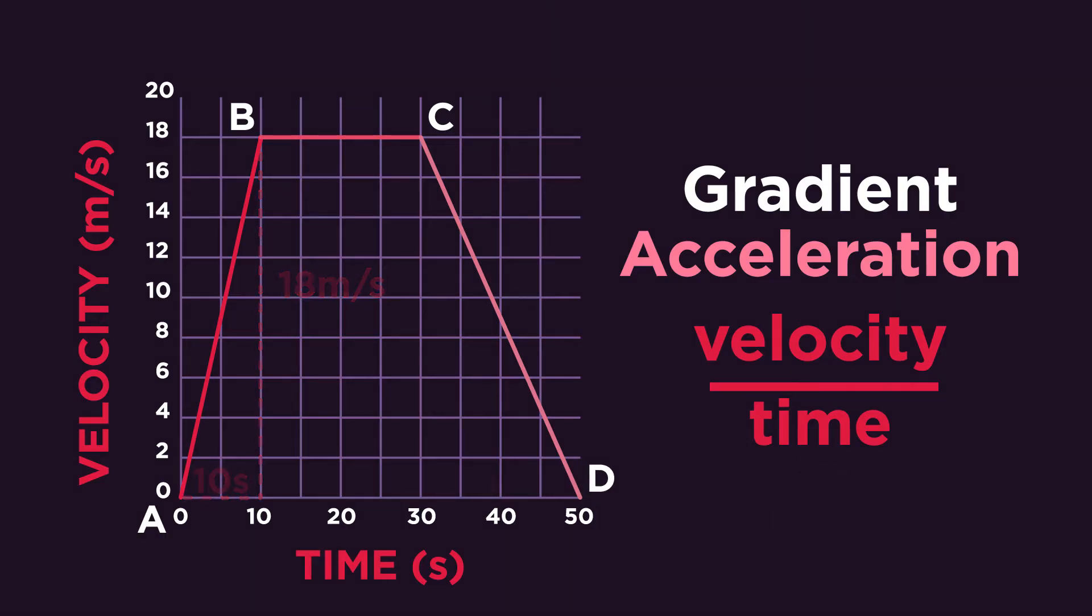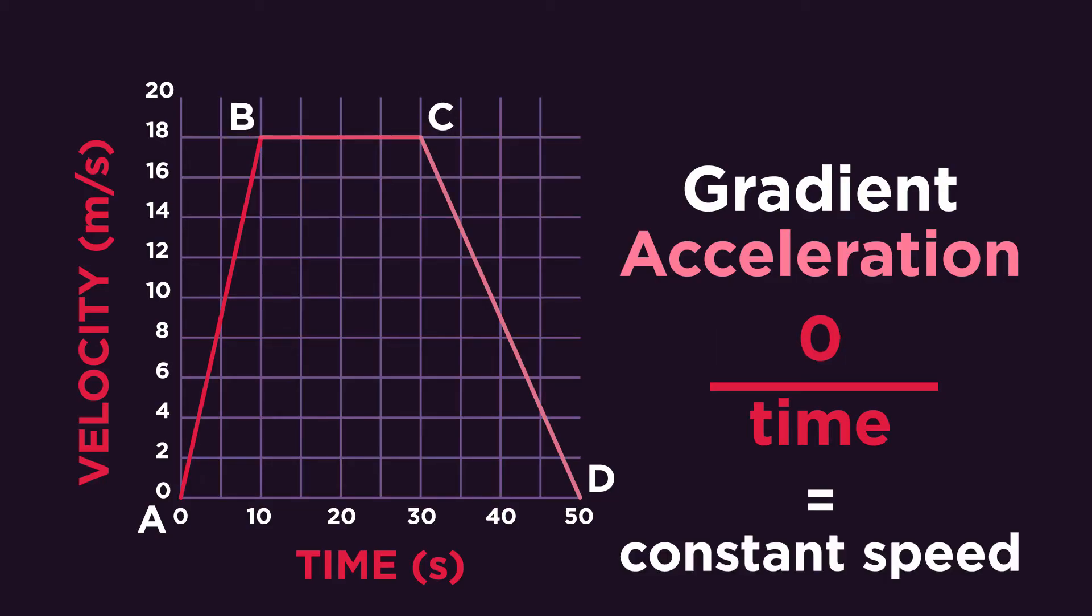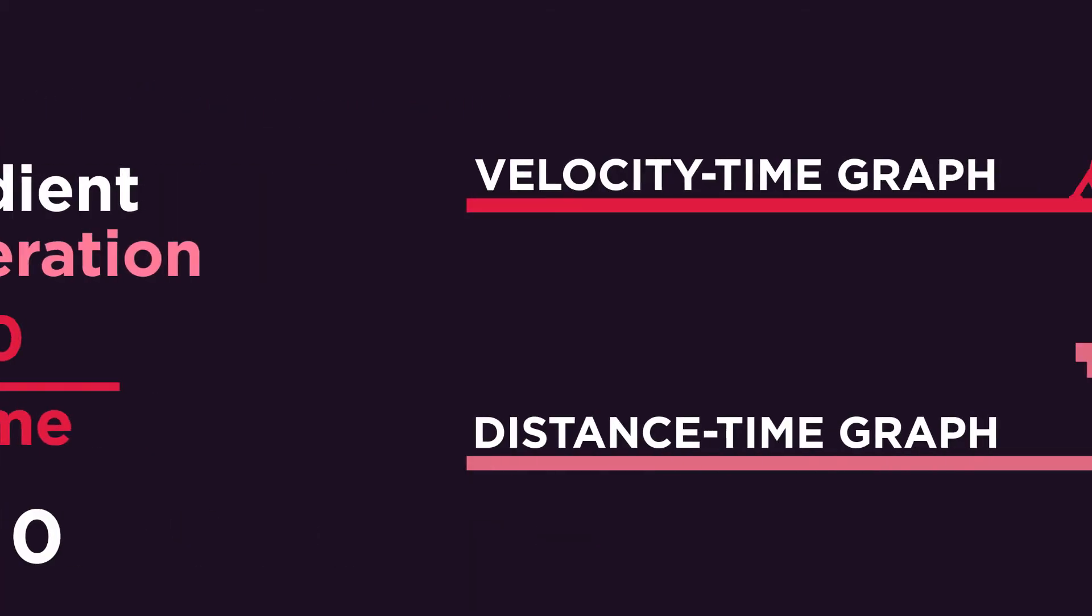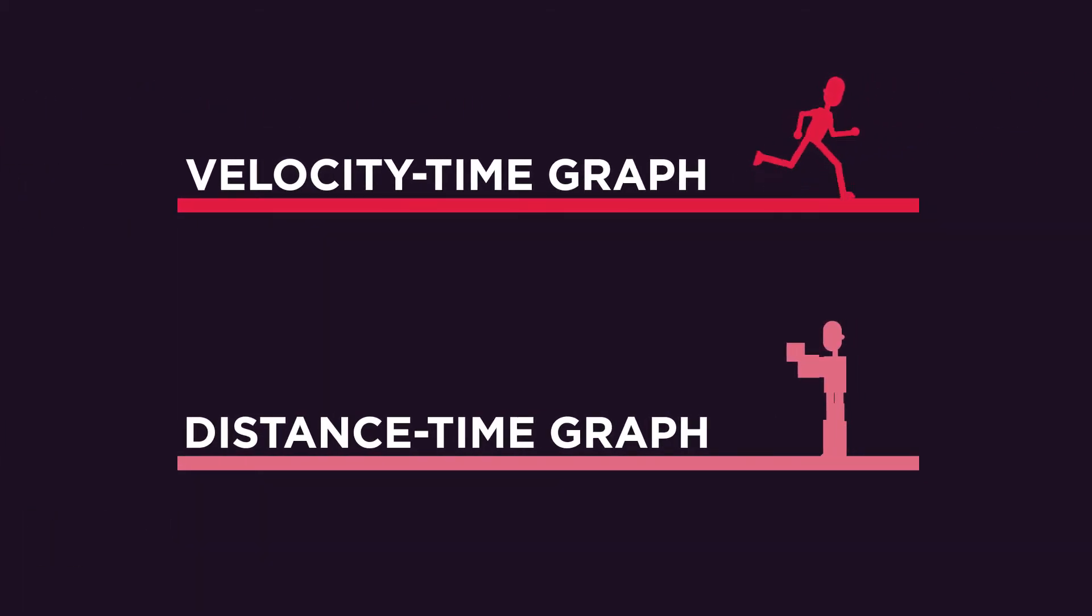The acceleration between B and C is fairly easy, as there is no change in velocity. The object is moving with a constant speed, therefore it has no acceleration. A horizontal line on a velocity-time graph shows a constant speed. Be careful though, a horizontal line here can still mean movement, whereas on a distance-time graph it meant no movement at all.